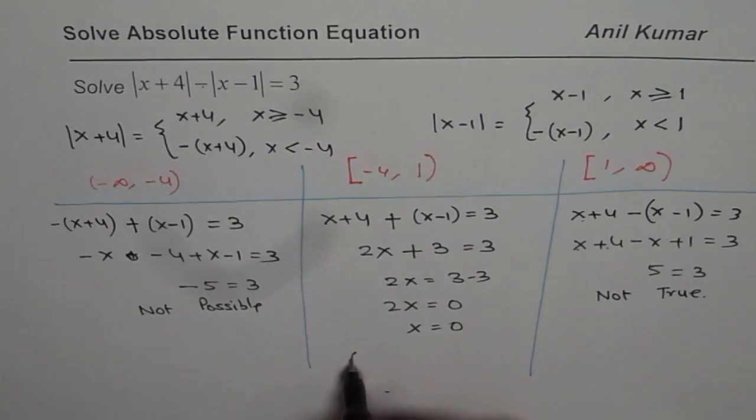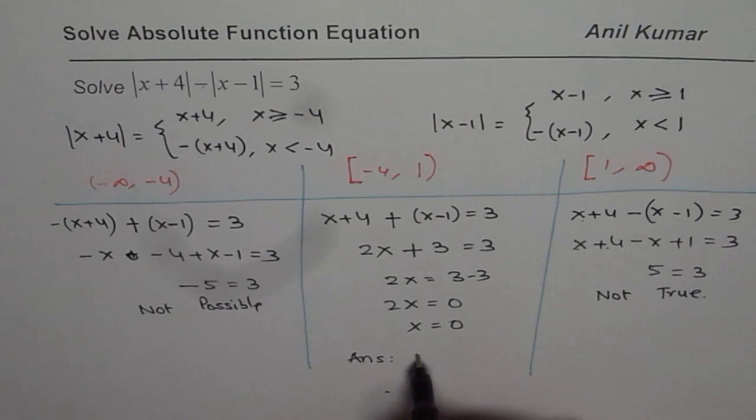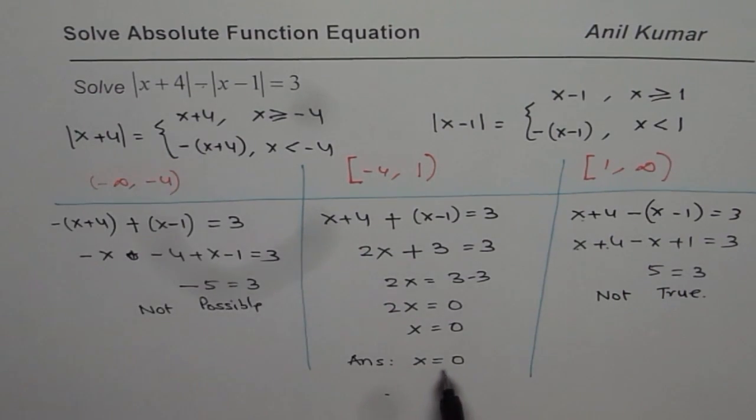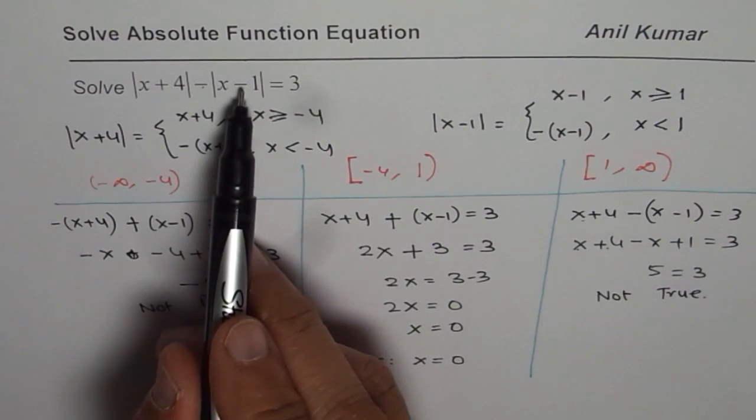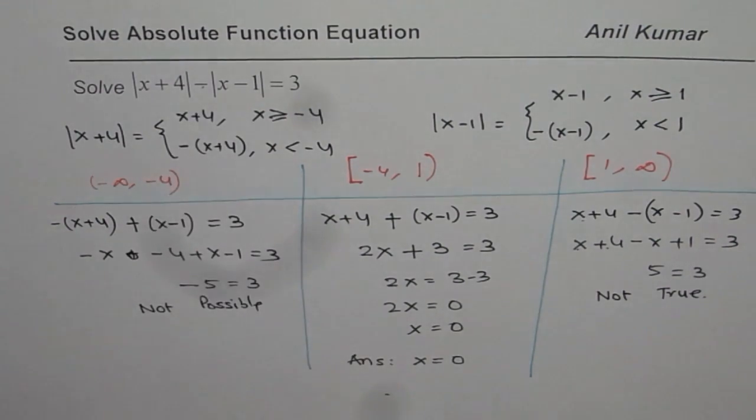We have only one solution, and therefore our answer is x = 0. Let's check by substituting 0: we get 4 - |-1| = 4-1 = 3. So we verified that this is correct. I hope that helps you understand how to solve such equations. Thank you and all the best.